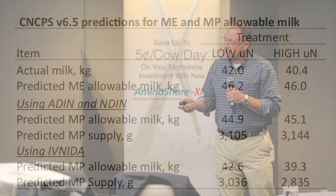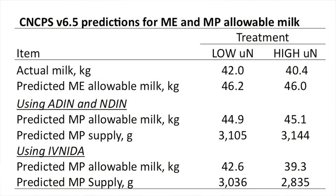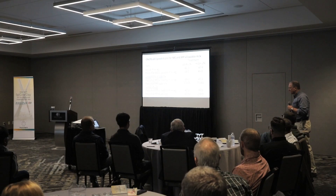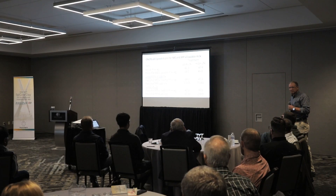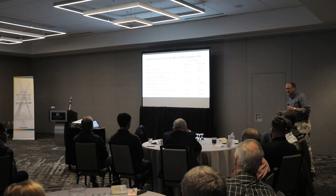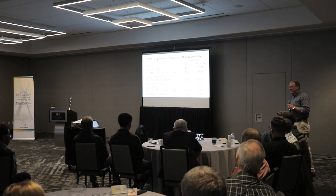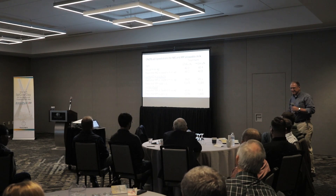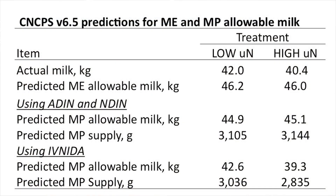I always love this — it's the best teaching tool that exists. Here's the actual milk: 42 and 40. Here's the predicted ME-allowable milk for these diets: 46 and 46, right around 100 pounds. So the cows make 42 and 40 and the energy prediction is 6 kilos — 12 pounds — higher. Is that a good or a bad prediction? Almost everybody tells me it's a bad prediction because the cows didn't make 46. But in reality, this is a great prediction from my perspective, because the cows are first limited on what? Protein.